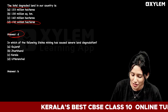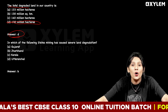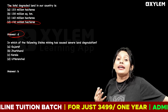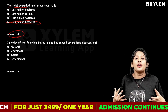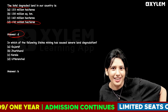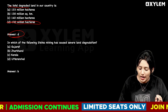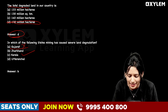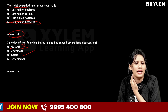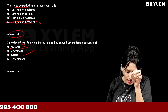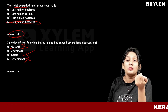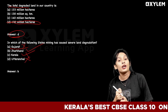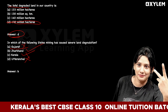In which of the following states has mining caused severe land degradation? The options are discussed. Gujarat is not the answer. Over-mining is a cause of land degradation in certain states.